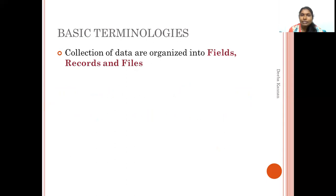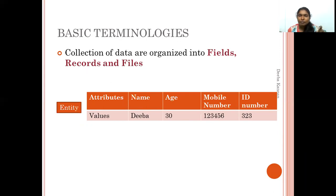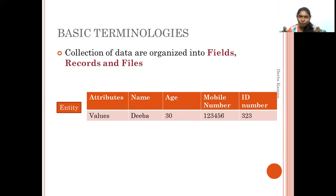These are the basics. We can see the field, records, files, etc. If we consider an entity, it has attributes. We can see the attributes as data items — name, age, mobile number, ID. These are common details. The attributes describe the entity, and they hold values. For example, name, age, phone number, ID number — this set represents the entity. The attributes belong to the entity, and the values are the actual data.